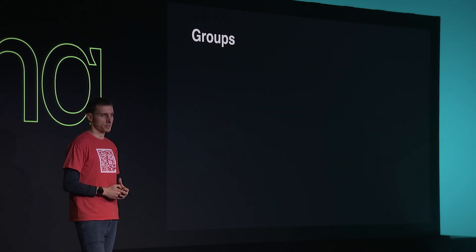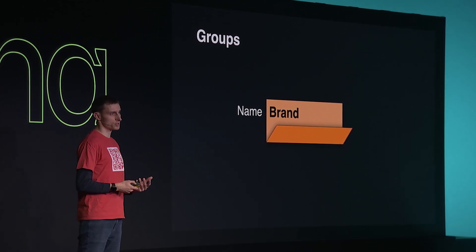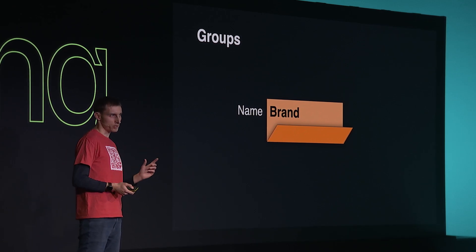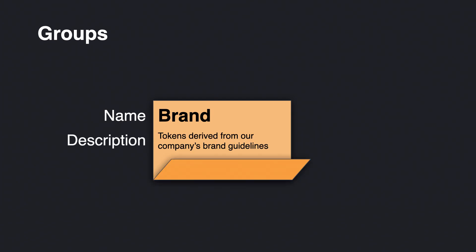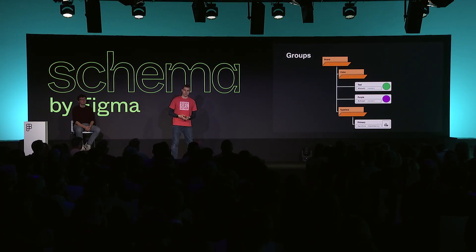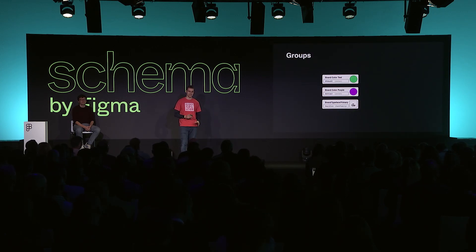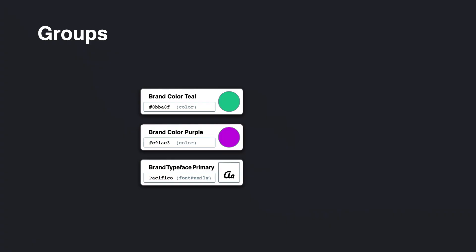The next thing you can represent in our files is what we call groups. Groups are a little bit like folders on your computer — just like you use folders to organize your files, you can use groups to organize your tokens. Every group has a name, which is the only mandatory bit of information a group has. Similar to tokens, they can also have their own descriptions. Groups can be used to organize your tokens however you like. You can put groups inside groups, tokens inside groups, or nest them as deep as you like. Using groups is entirely optional — you can absolutely have a single flat list of all your tokens — though you'll probably find you need longer names to ensure uniqueness.